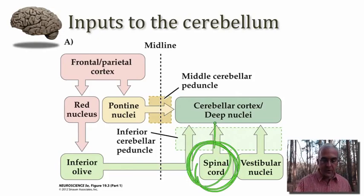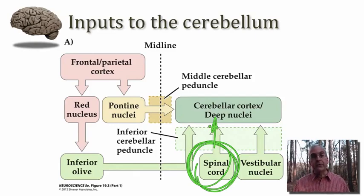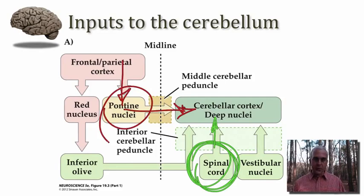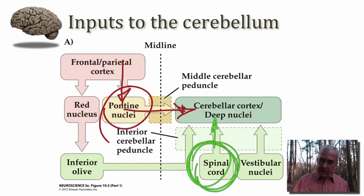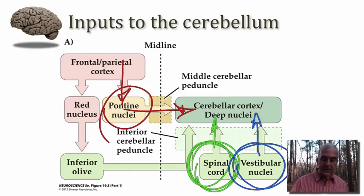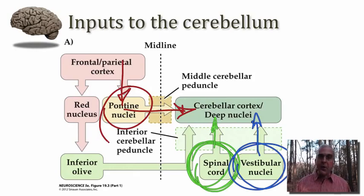This spinal cord input is directed mainly at the median zone of the cerebellum called the spinocerebellum. The cerebrocerebellum, on the other hand, gets information principally relayed via the pontine nuclei — so this massive connection from cortex to pontine nuclei to cerebellum goes mainly into the lateral hemispheres, into the cerebrocerebellum. The vestibular inputs, sent in some cases directly from the eighth nerve and in others via a relay through the vestibular nuclei of the brainstem, are conveyed to the vestibulocerebellum — the floccular nodular lobe tucked underneath the posterior part of the cerebellum.